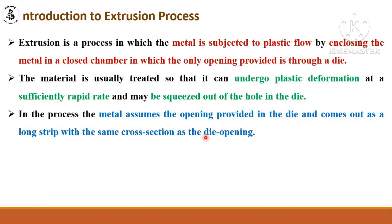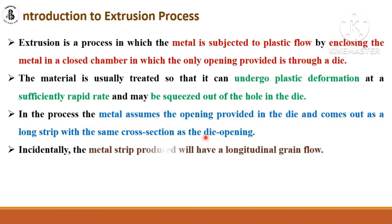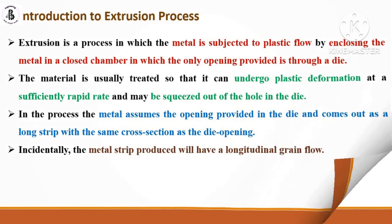Whatever the cross-section of the die, the extruded product will have that same cross-sectional area. Later I will show the different cross-sectional areas that can be made with the extrusion process. The extruded metal strip will have a longitudinal grain flow. Whatever length you require, that amount of material is filled into the chamber and passed through the die.